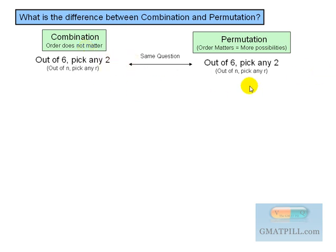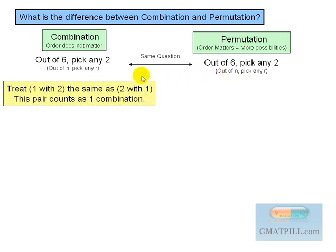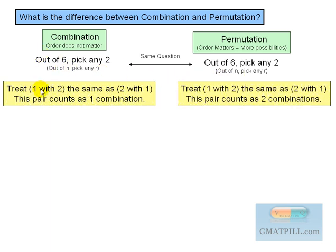Let's go through this example. Basically, we're saying we treat 1 with 2 the same as 2 with 1. That counts as one combination. And in the permutation case where you're giving each person a unique identifier, then this counts as two different combinations. Let's look at the formula.